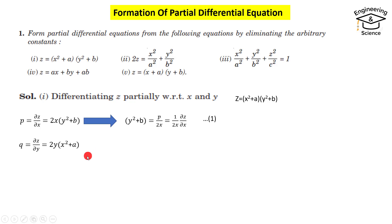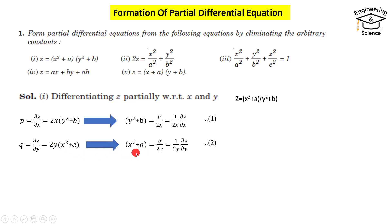Now differentiating with respect to y, q equals partial z with respect to y equal to 2yx squared plus a. Then x squared plus a equals q over 2y, where q equals partial z with respect to y. We get this relation.